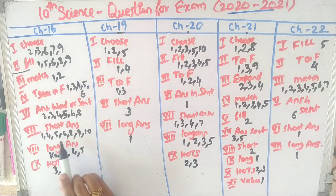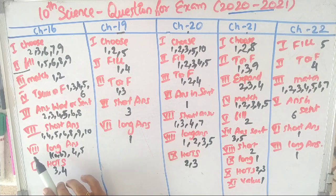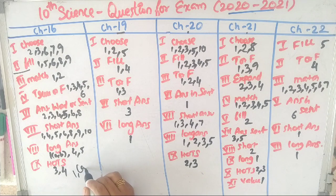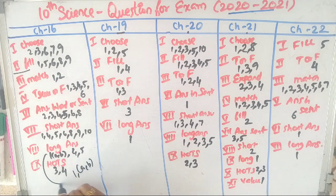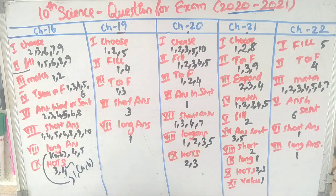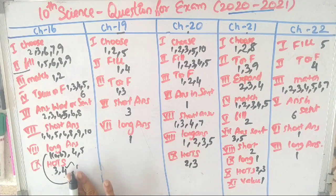Seven, short answer is 1, 4, 6, 8, 9, 10. Eighth, long answer is a, b. Four and five. Chapter 9 is 3 and 4. This is chapter 16.